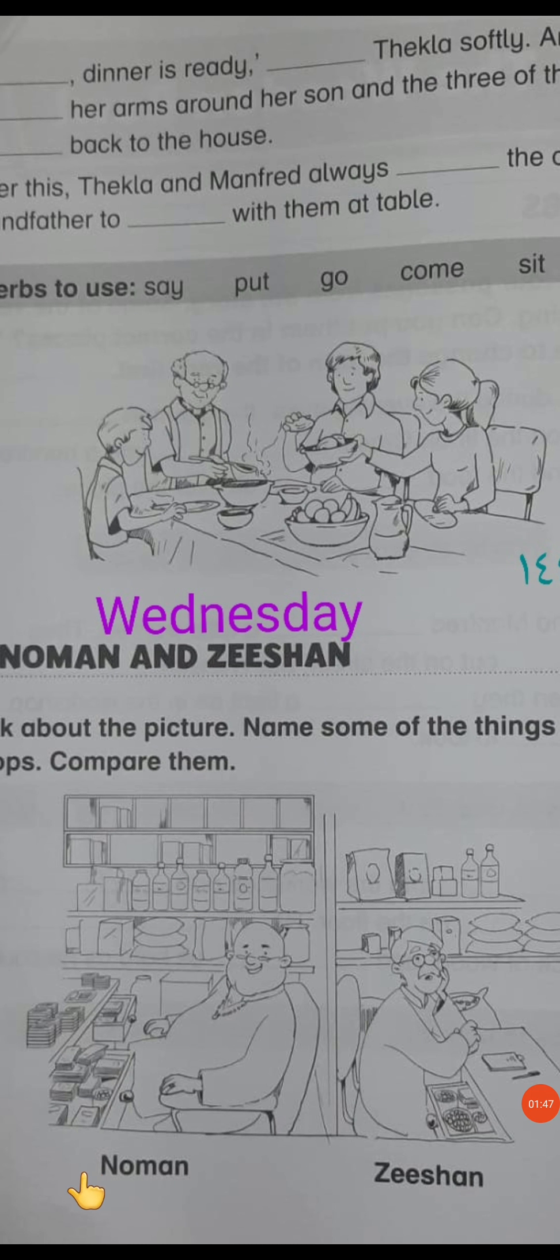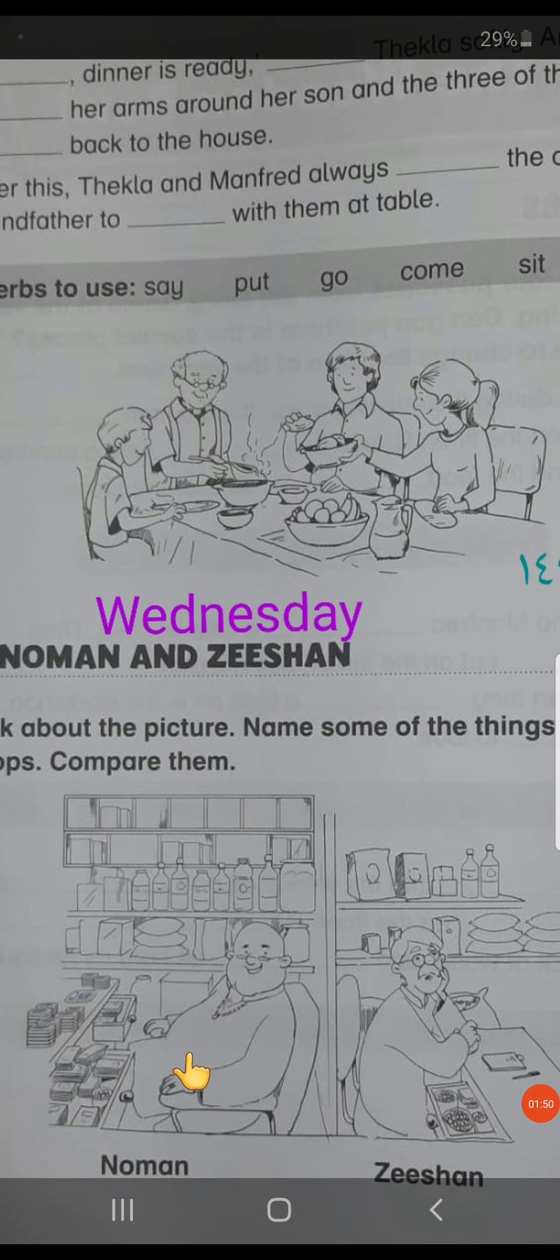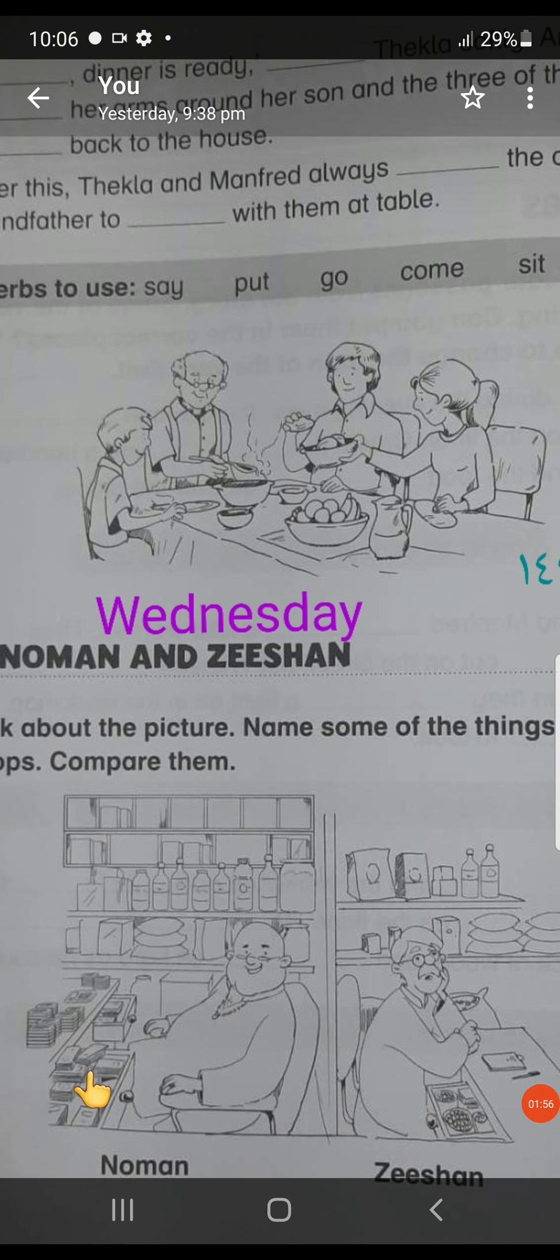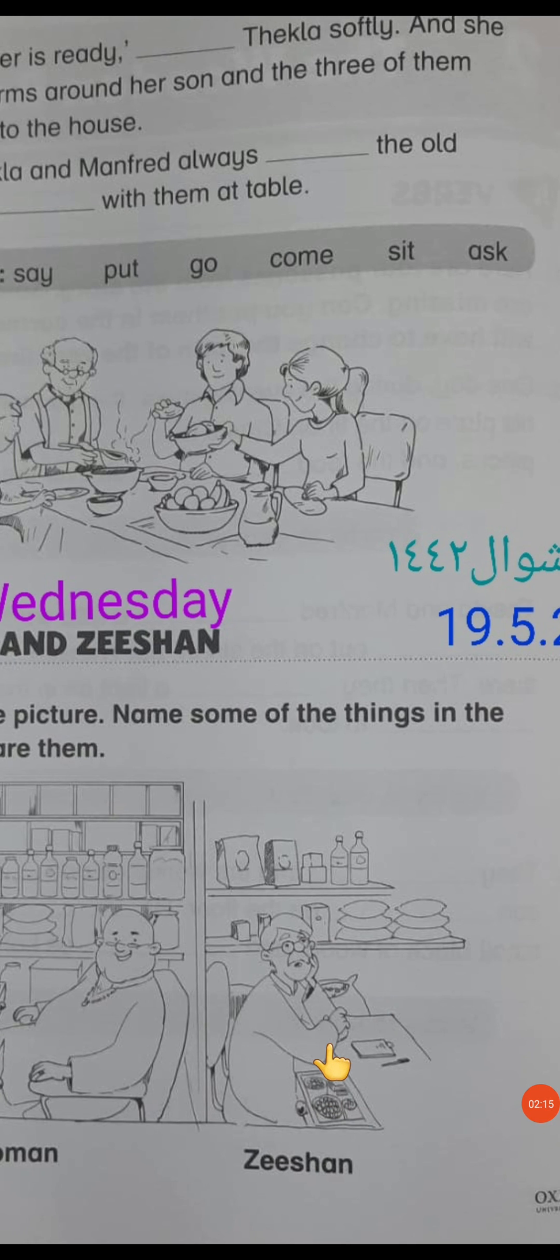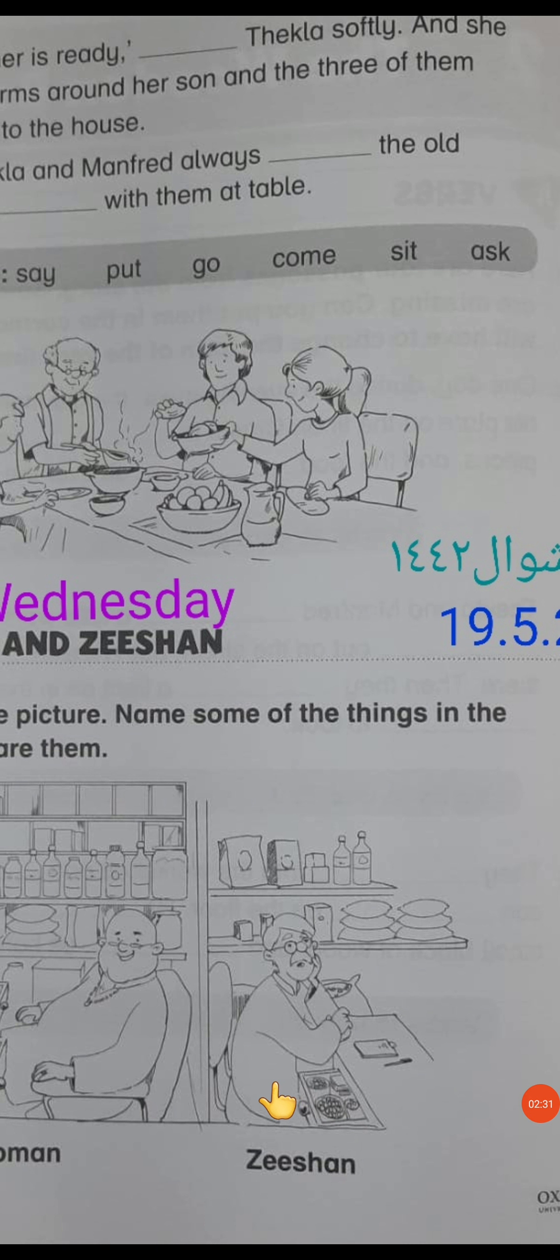Today we are going to compare with regard to their differences. Let's talk about the picture. First talk about Naman's shop. Here on the table there is a lot of money on Naman's table. And then here on the shelf there are some bottles, some boxes, some cans and some sacks. Now let's talk about Zishan's shop. There is no money on the table.